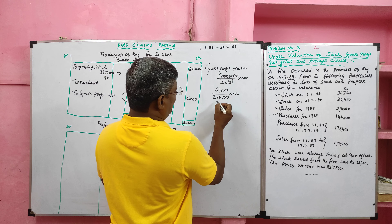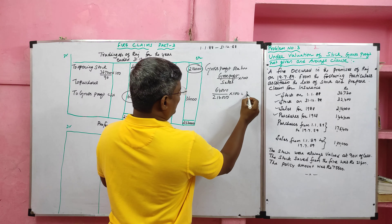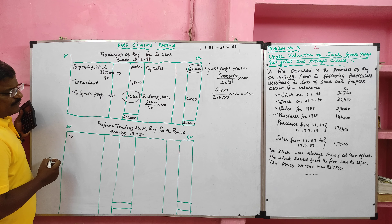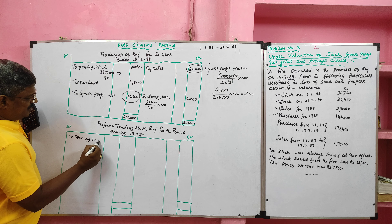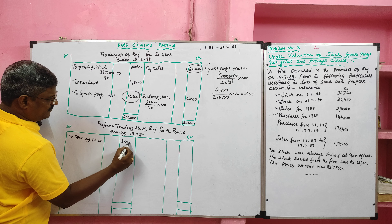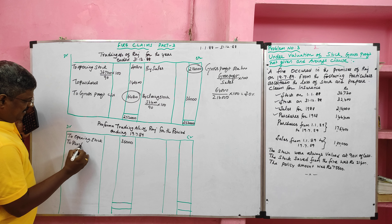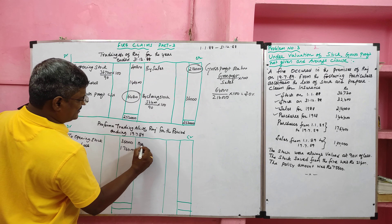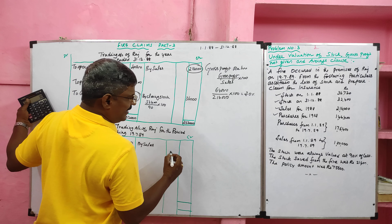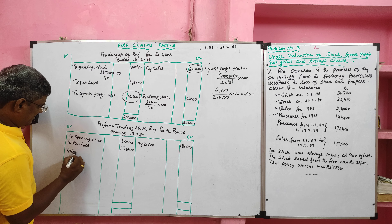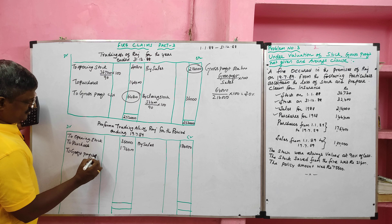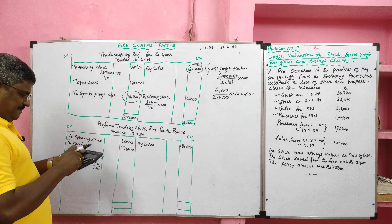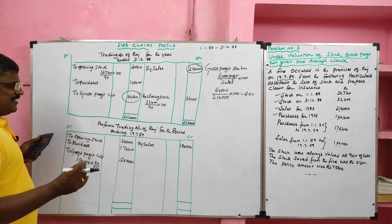Gross profit is ₹64,800 and sales are ₹2,16,000, so ₹64,800 ÷ ₹2,16,000 × 100 gives us 30%. This gross profit ratio of 30% can now be applied to the fire period. We start the pro forma trading account with the opening stock, which is the closing stock of the previous year. Purchases from 4th January 1989 are taken, and sales from 4th January to 19th July 1989 are ₹1,18,000, giving a gross profit of ₹1,18,000 × 30% = ₹35,400.